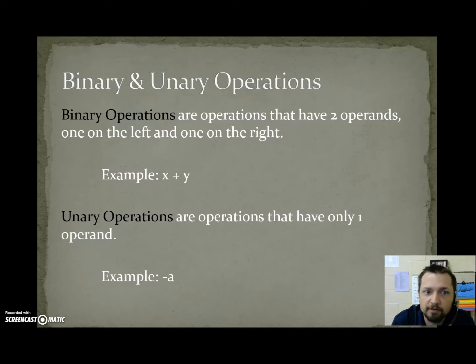Binary and unary operations. Binary operations are operations that have two operands, one on the left and one on the right. In the example x plus y, the operation is addition and the operands are x and y. Unary operations are operations that have only one operand. Minus a would mean the opposite value of a. If a were 8, we'd get minus 8. If a were minus 8, we'd get 8.